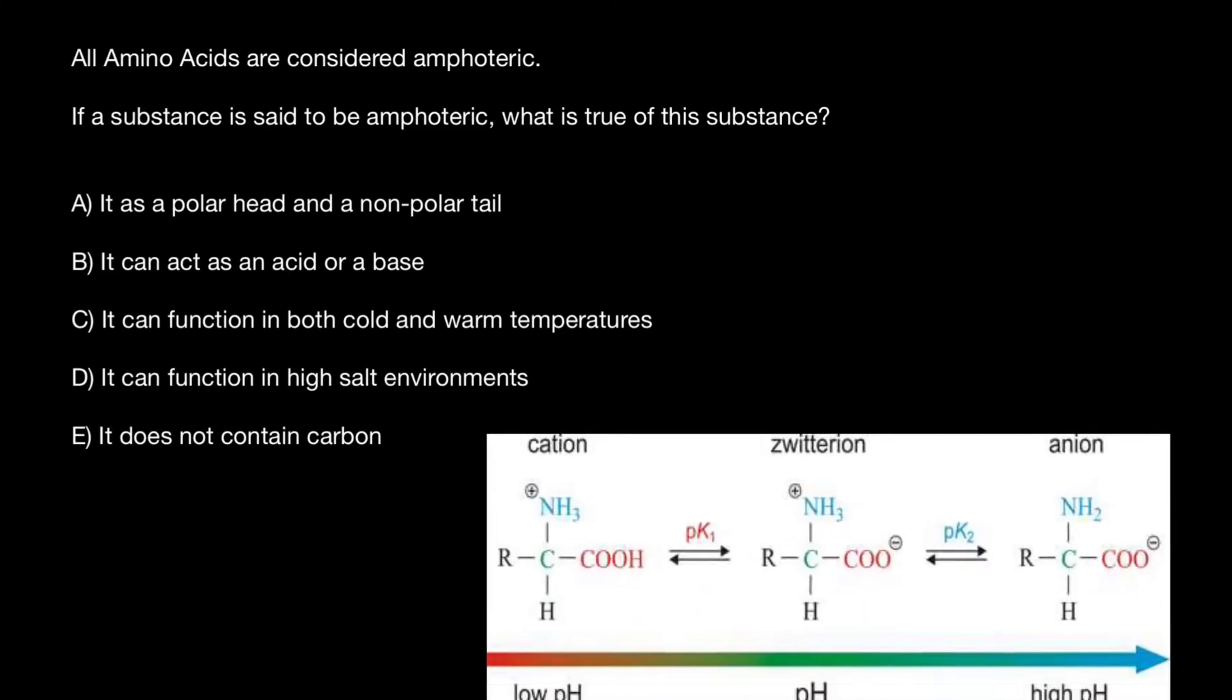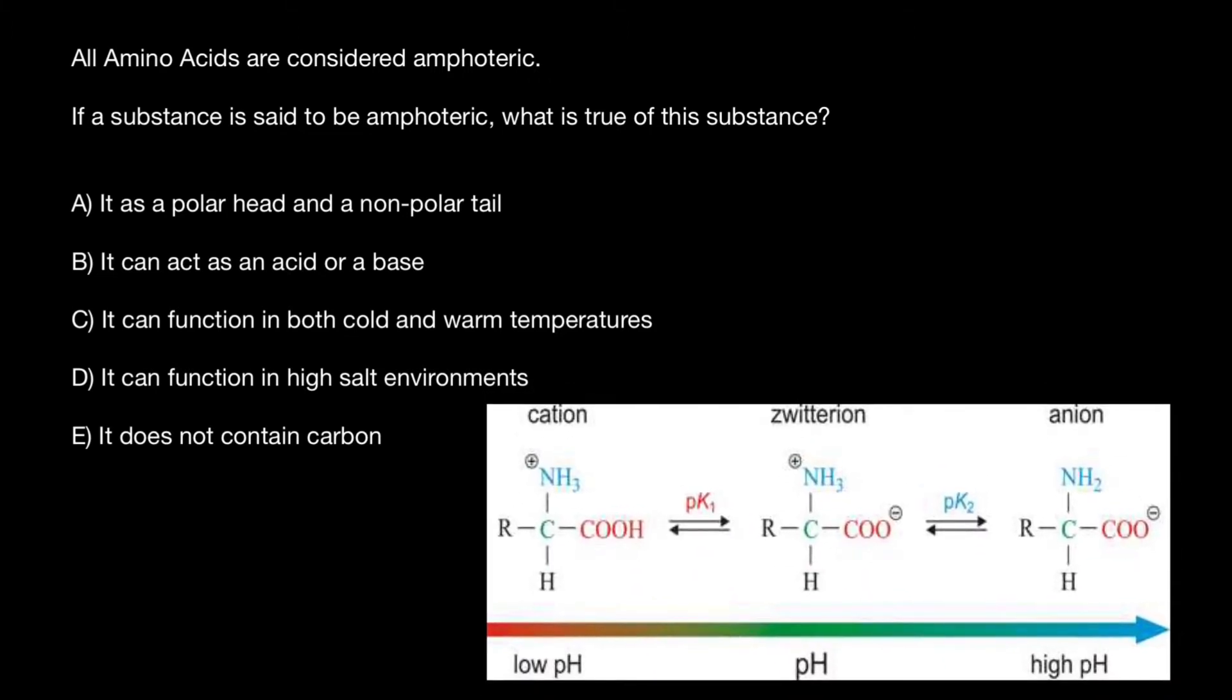Take a look at this picture. Amino acids are amphoteric compounds as they contain both acidic and basic groups. Depending on the pH of the solution, they can behave as both acids and bases.